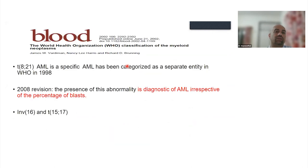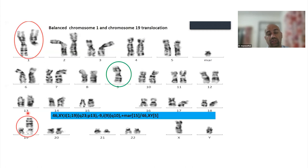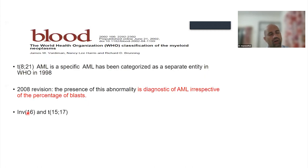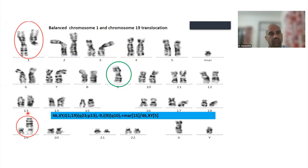When we did the karyotyping, we got a translocation 8;21 with a deletion. As all of you know, the WHO classification from 2002 has said that if you have an 8;21 translocation, it is diagnostic of acute myeloid leukemia even if blasts are less than 20%. Our patient had zero blasts, but we still had to call it an acute myeloid leukemia because the translocation 8;21 was present. The other abnormalities wherein you can call something AML is inversion 16 and 15;17, irrespective of the blast count.